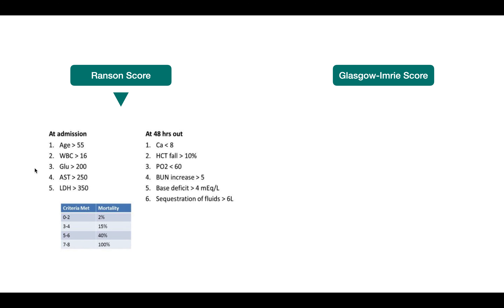Other scoring systems include the Ranson Score and the Glasgow Emery Score. The Ranson Score is famous but has a drawback: some points can only be assessed after 48 hours of admission. It includes factors such as age, white blood cells, glucose, AST, LDH, respiratory function, calcium, and renal function — 11 points in total.